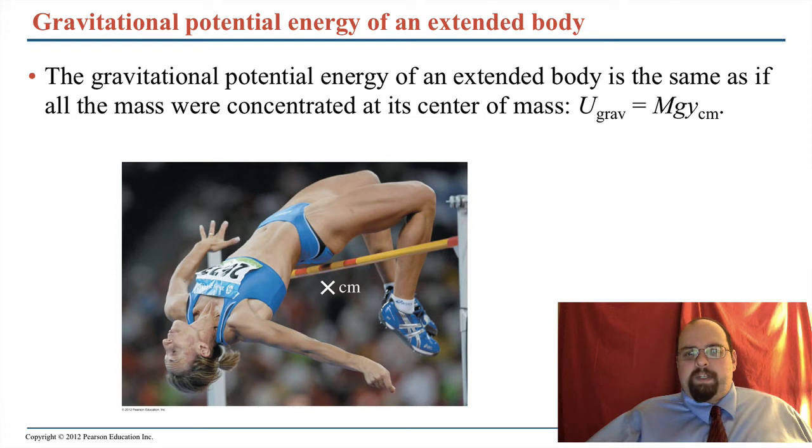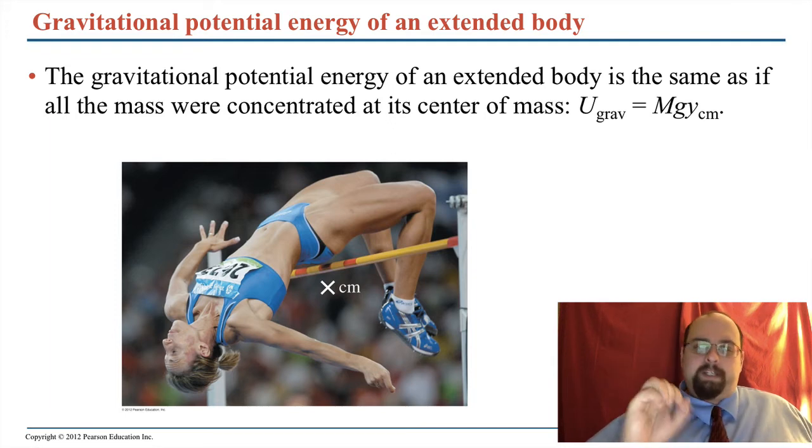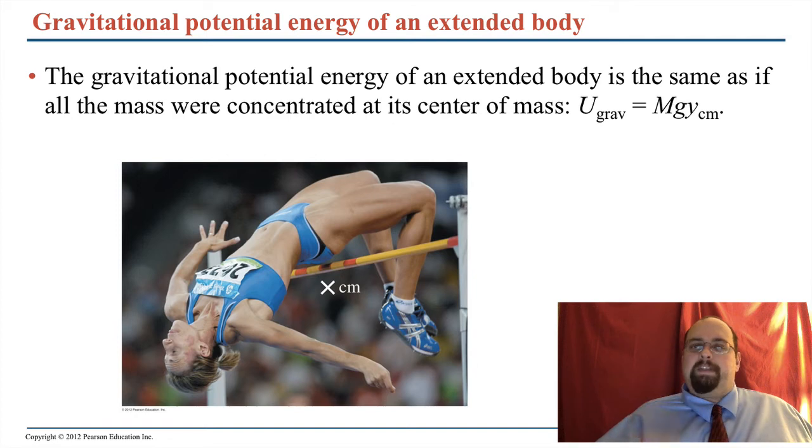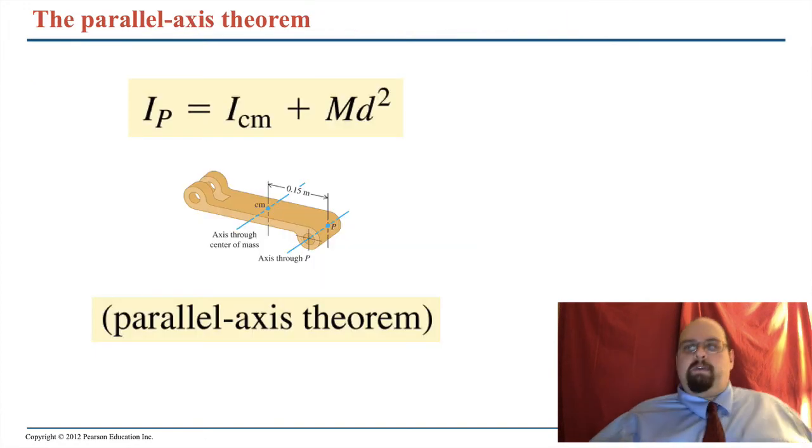So regardless of the shape of the body, if it is weird and spinning and whatnot, that doesn't matter. It's gravitational potential energy. Just treat it as if it has the gravitational potential energy at the center of mass. You don't really have to worry about rotational gravitational potential energy. There's no need for a new formula there.